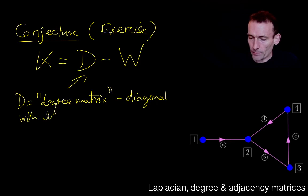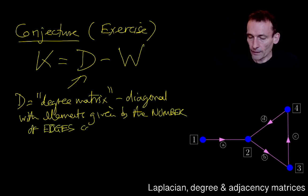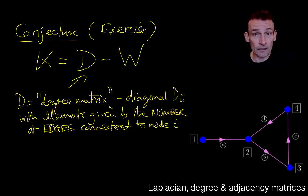With elements, it's given by the number of edges connected to node i. So with diagonal d_ii, the ith diagonal element will be the number of edges connected to node i, where i of course labels the node.